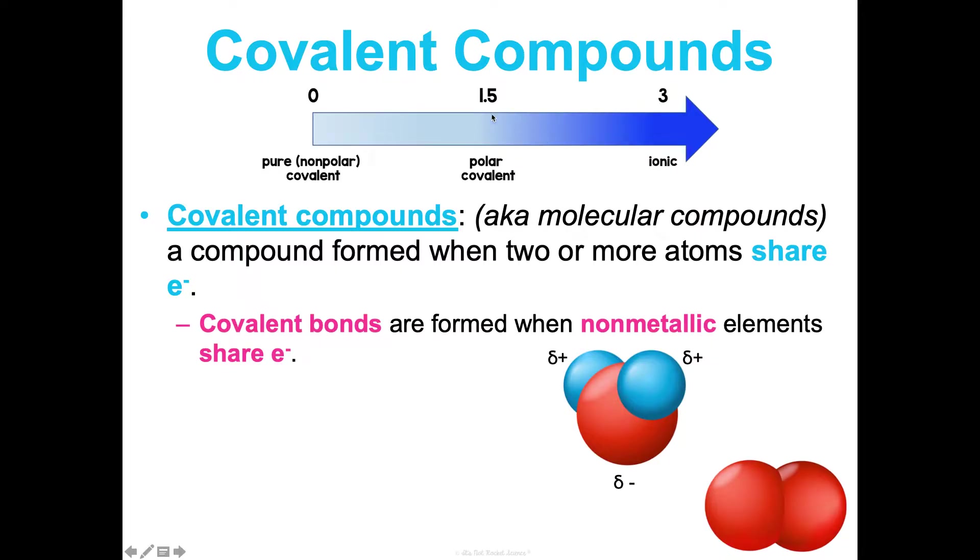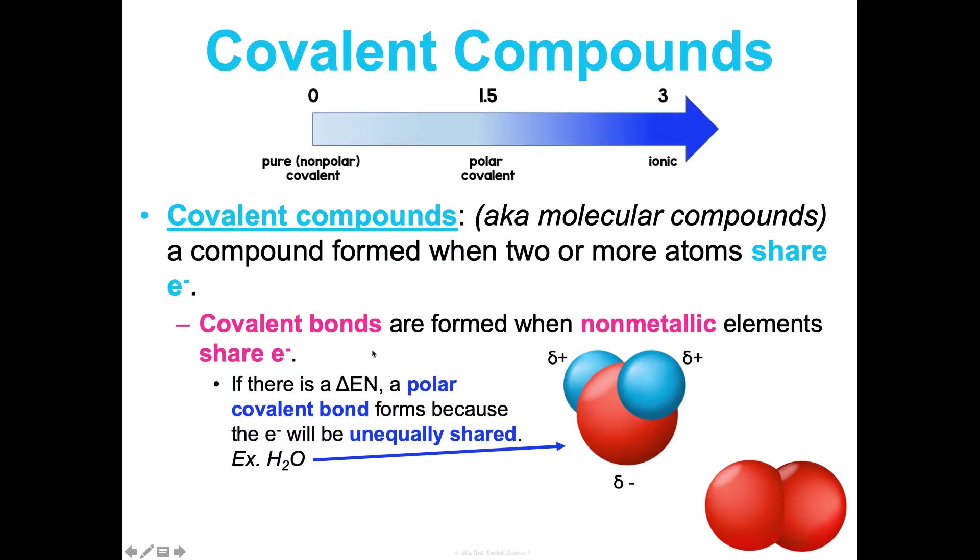Bonding is a spectrum, and we know if something's going to be more ionic or covalent based on the difference in electronegativity, the delta EN between two elements. Covalent has a wide range because the bond can be non-polar covalent or polar covalent. If the difference in electronegativity between two atoms exists, then the bond is a polar covalent bond because the electrons are unequally shared.